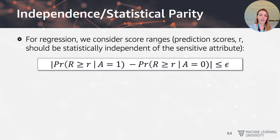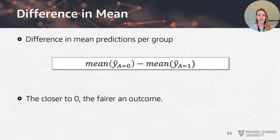In the case of regression, we don't have discrete labels but prediction score ranges. To say that scores are statistically independent of the sensitive attribute, we can calculate the difference in means per group — similar to calculating accuracy differences — and we would want the difference in means to be zero.